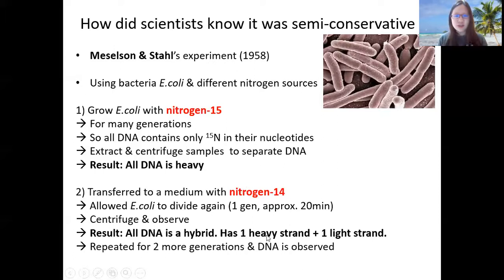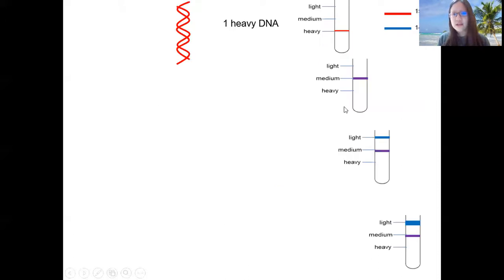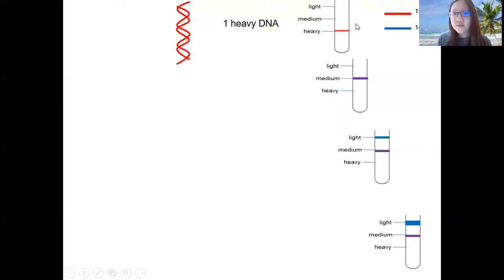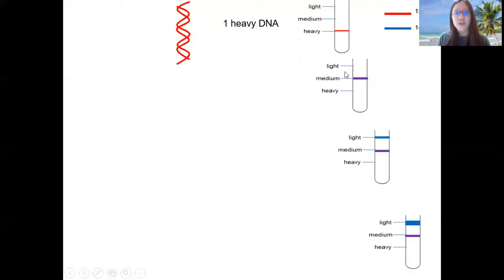They did it for many, many more generations and observed the DNA weight at every single step. Of course these are words and not very easy to imagine, so let's look at the experimental results. This is what they get in generation zero — before any division has occurred. It's still in the heavy DNA state, because the E. coli has been grown in 15N for many generations.